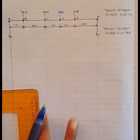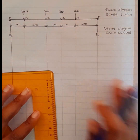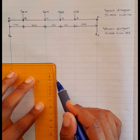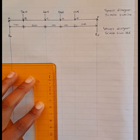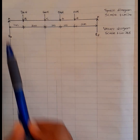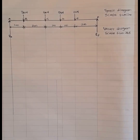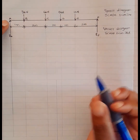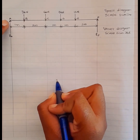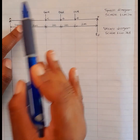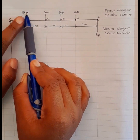Now we are going to draw a vertical line anywhere in this space. In this vertical line we are going to place our alphabetical points. I'm going to put my point A right here — this will be my point A. Then from point A to B I have a force of 3 kilonewtons.